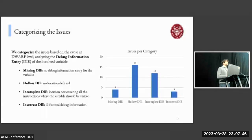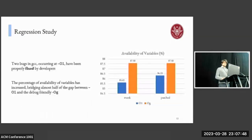Thanks to the two bugs fixed by GCC developers, we were able to conduct a regression study. We compared the availability of variables pre and post the patch between the affected optimization level, which was O1, and the debugger-friendly optimization level OG. And we can see how, thanks to these fixes, we were able to help them bridge almost half of the gap between these two optimization levels.